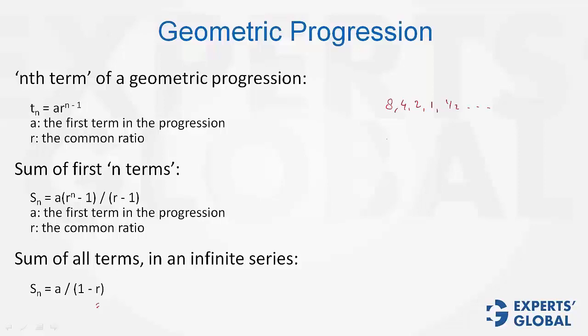If the numbers were increasing, for example, 8, 16, 32, 64, then this would be a series with infinite sum. So, an infinite series can have a finite sum only when the values are diminishing, when mod r is less than 1.